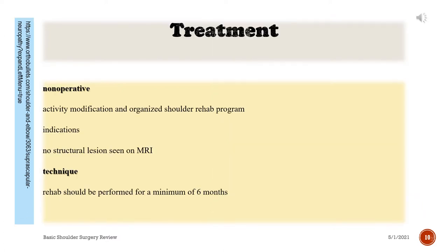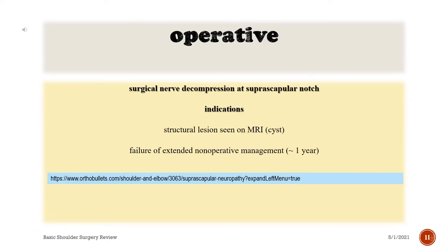Treatment — Non-operative: activity modification and an organized shoulder rehabilitation program. Indications: no structural lesion seen on MRI. Technique: rehabilitation should be performed for a minimum of 6 months. Operative treatment: surgical nerve decompression at the suprascapular notch. Indications: structural lesion seen on MRI, cyst, or failure of extended non-operative management of approximately 1 year.